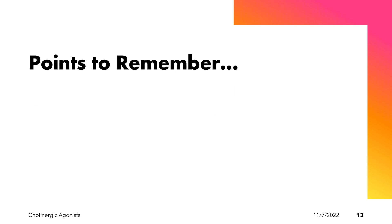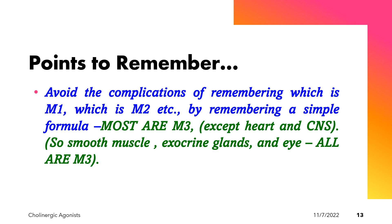To easily remember the locations of the different muscarinic receptors, here is a simple formula: most muscarinic receptors are M3, except in the heart, which is M2. Most of the CNS uses M1, and the stomach — particularly the parietal cells — is also M1. All other smooth muscles, exocrine glands, and the eye are M3.